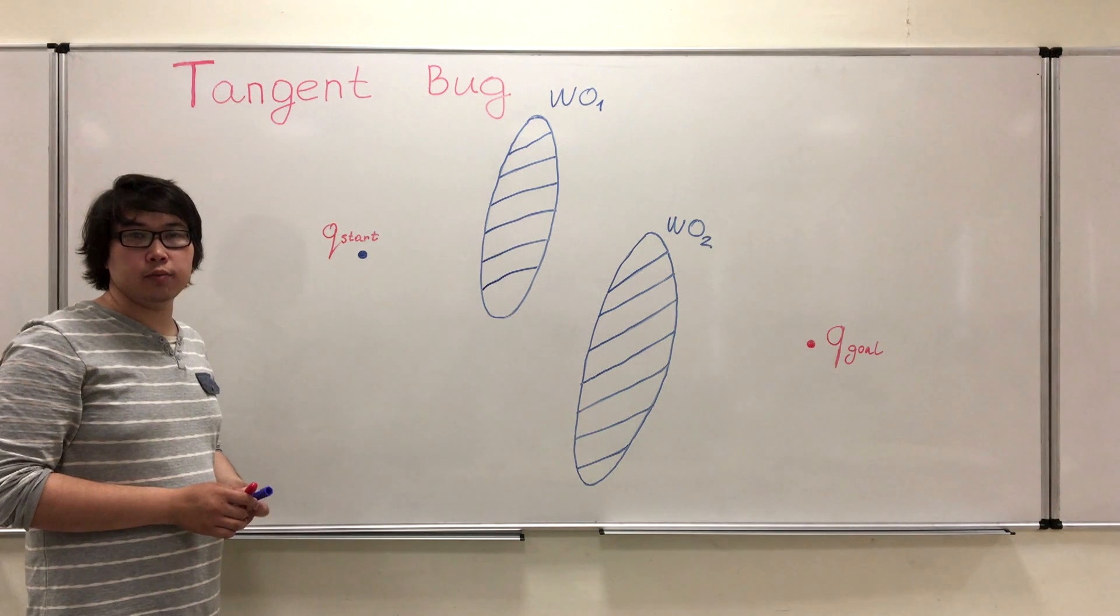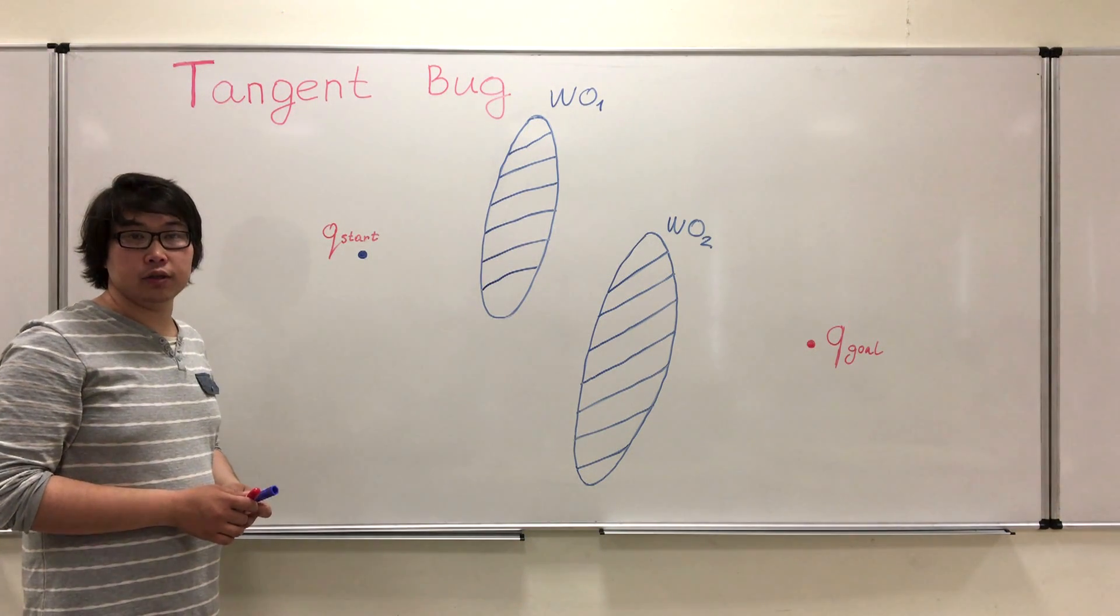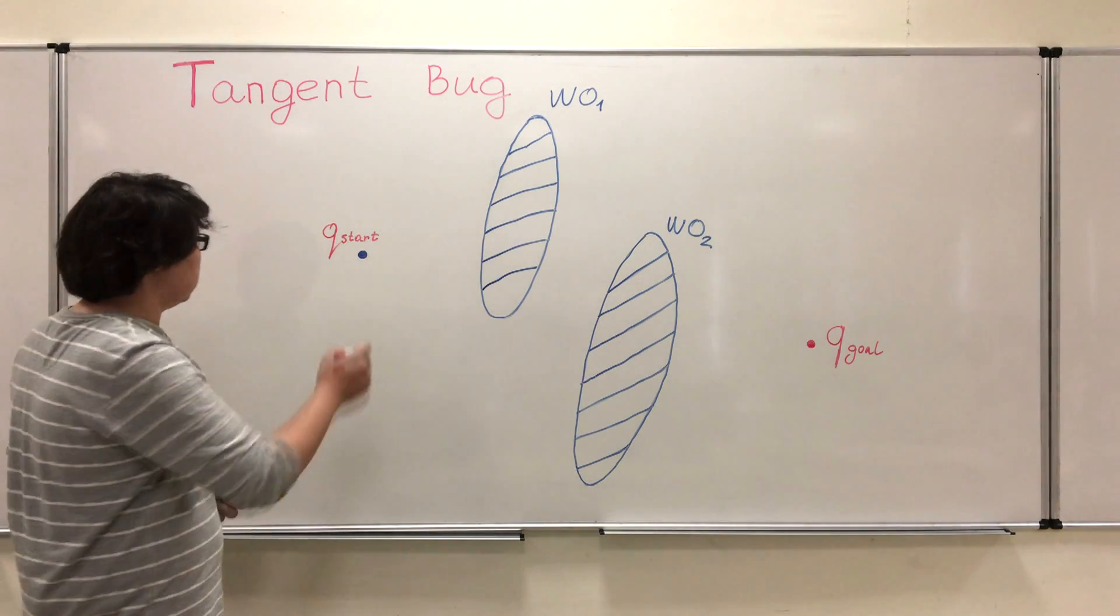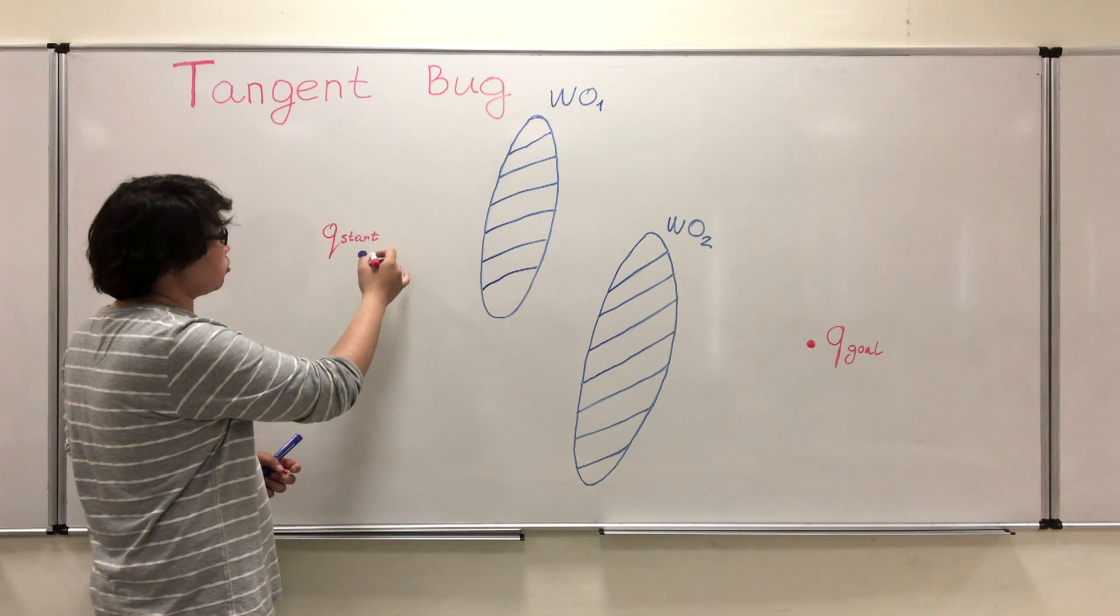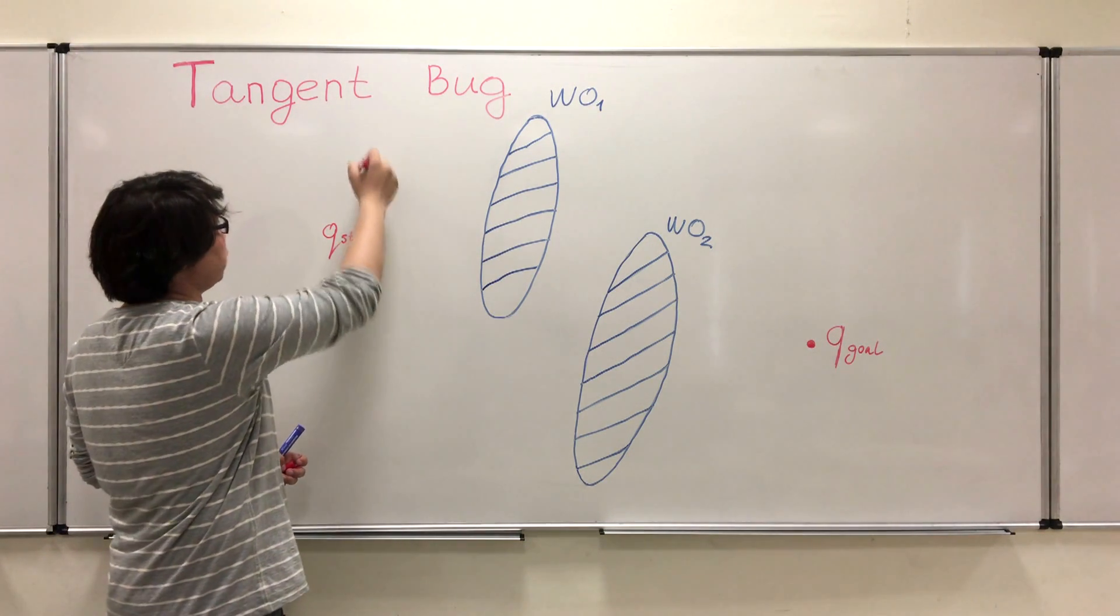Let's consider one sample from rangefinder sensor. A sensor has a maximum radius of detection, let's call it R.